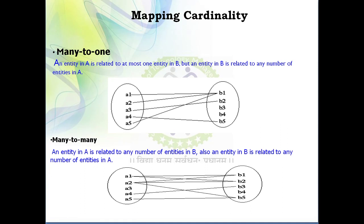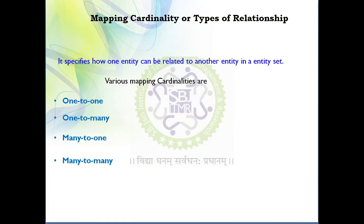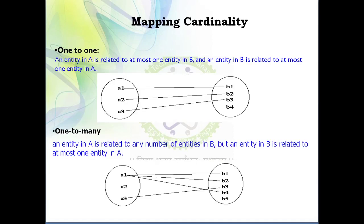The fourth type is many-to-many relationship. Here, many entities in set A are related to many entities in set B. Multiple entities from A are associated with multiple entities in set B. These are the four types of mapping cardinality or types of relationship, which are very useful while drawing an ER diagram.